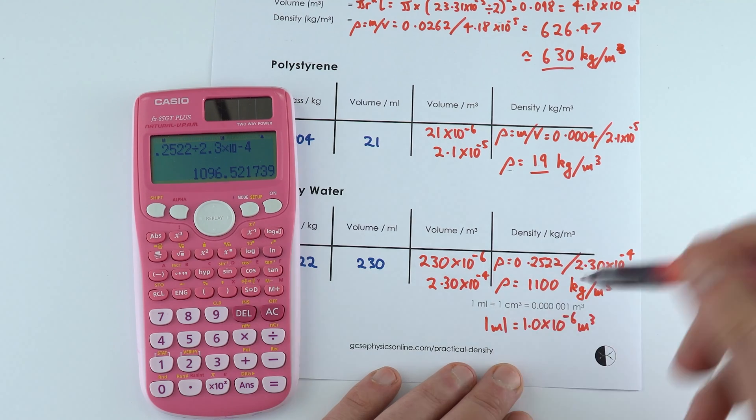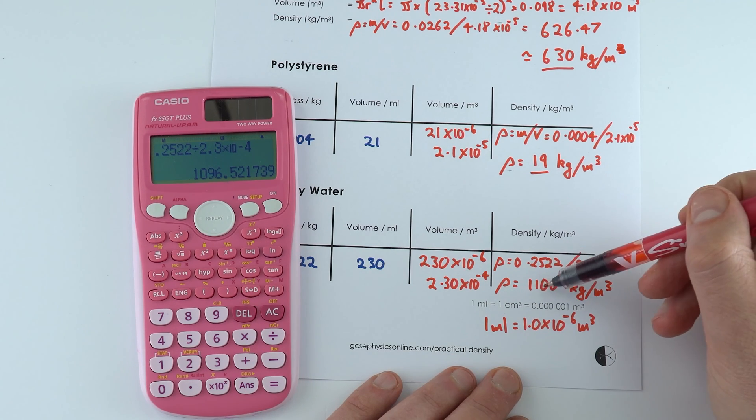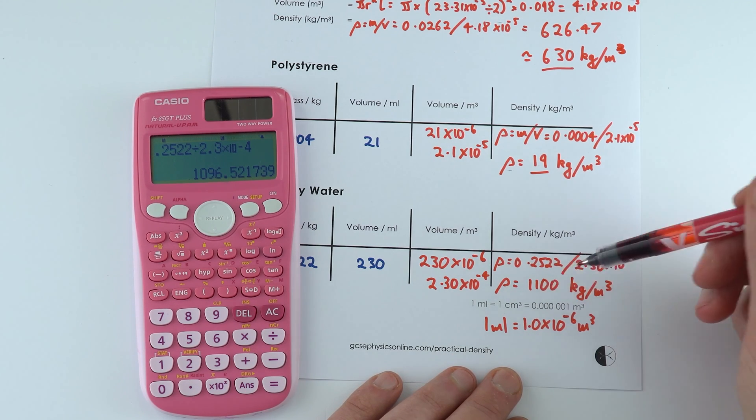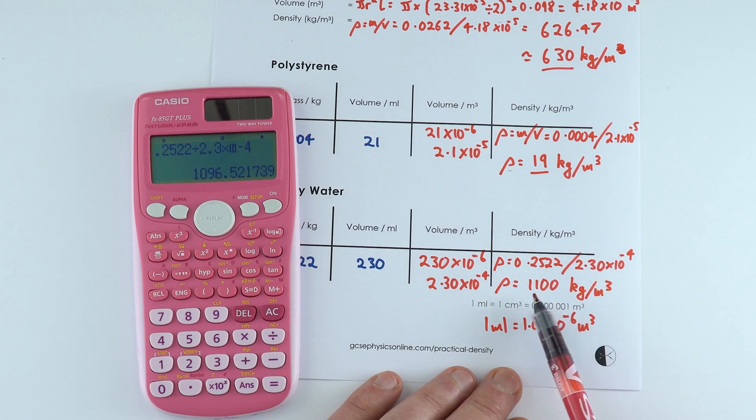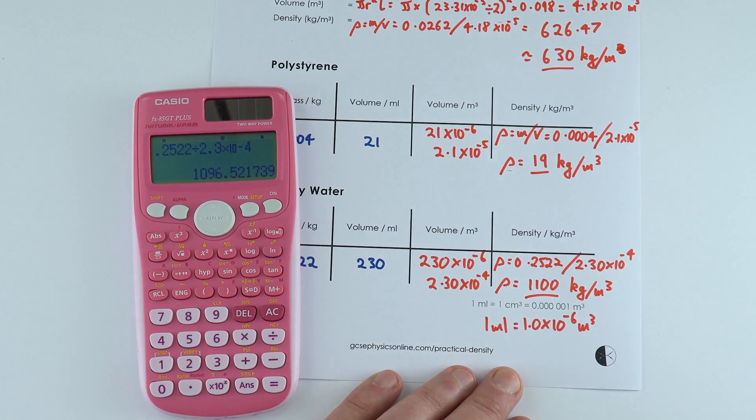Which again is kind of what we'd expect because it's got the sugar dissolved in it, it's going to have a slightly higher density than normal water. So this one here is 1100 kilograms per cubic meter.